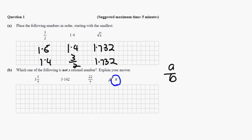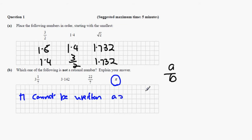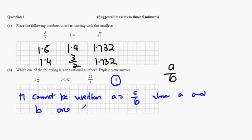To explain this answer, pi cannot be written as a over b where a and b are positive integers.